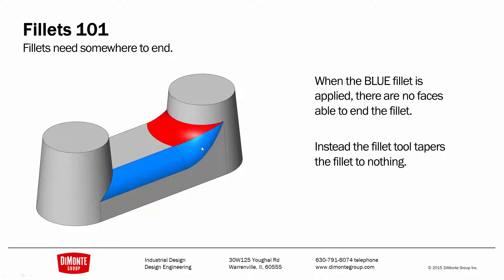Now, when I go to add the blue fillet, there are no faces available to end the fillet. So what the fillet tool is also able to do is taper itself to nothing where it terminates at this corner here. Note that the size of the fillet is decreasing, but the radius of the fillet is not. The radius stays the same along its length.